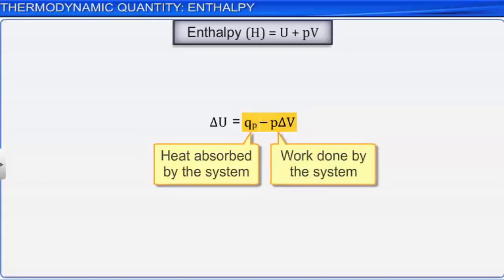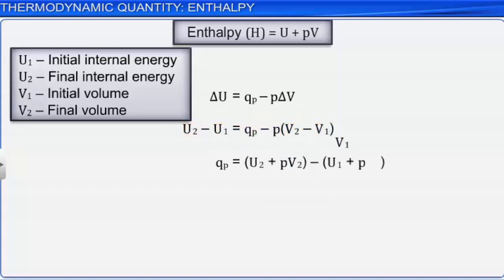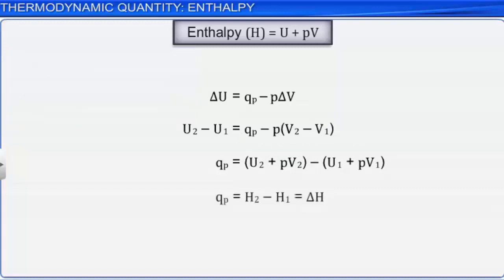Let U1, U2, V1, and V2 represent the initial and final internal energies and volumes respectively. The equation can be written as: U2 − U1 = QP − P(V2 − V1). On rearranging: QP = U2 + PV2 − U1 − PV1. Since U + PV = enthalpy H, the equation becomes QP = H2 − H1 = delta H. Therefore, delta H = QP.